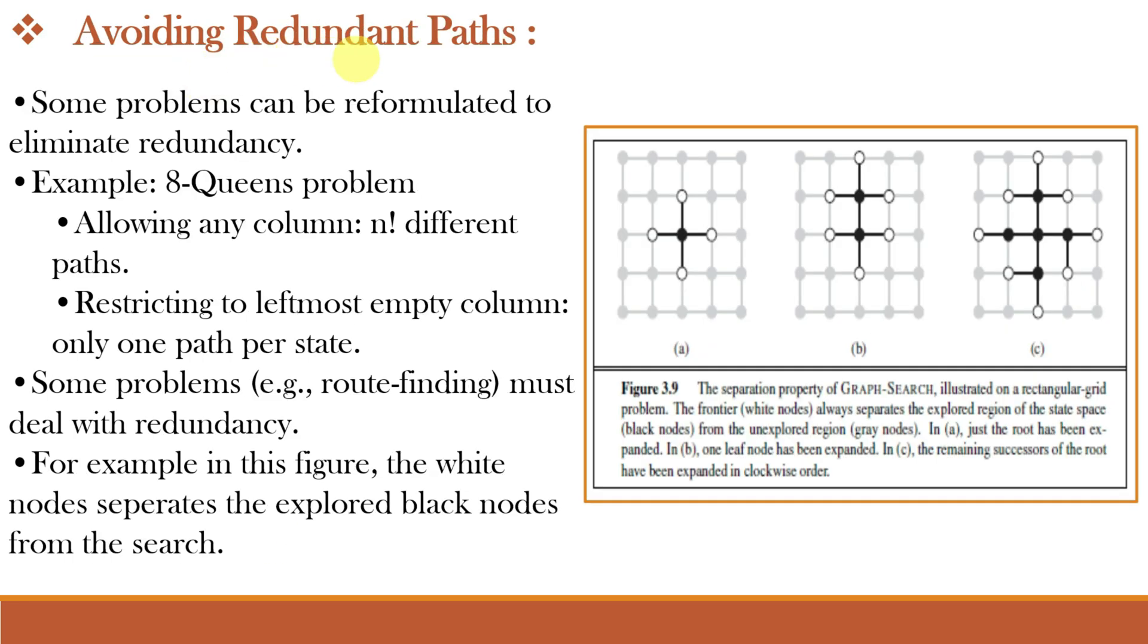How can we reduce redundancy? In some cases, reformulating a problem can reduce redundancy. For example, in the 8 queens problem, defining rules properly reduces paths. However, some problems naturally have redundant paths.